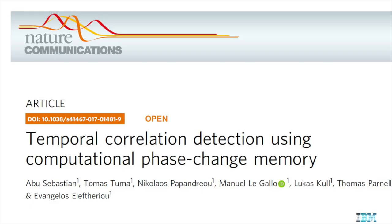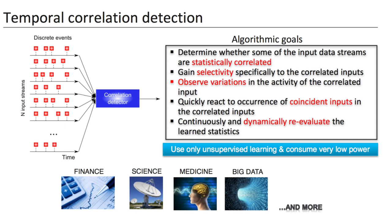In our paper, what we've shown is we can use computational memory to find temporal correlations between event-based data streams. This is an application that arises in a wide range of fields, such as Internet of Things, life sciences, social media, and so on.